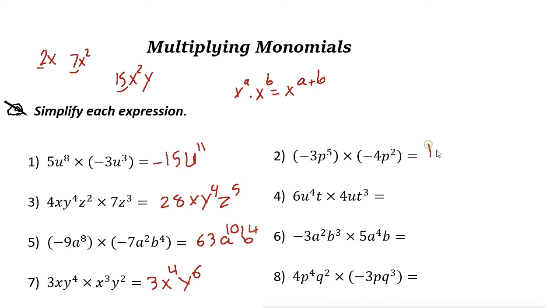Negative 3 times negative 4 is 12. P to the power of 5 and p to the power of 2, if you multiply, you get p to the power of 7.